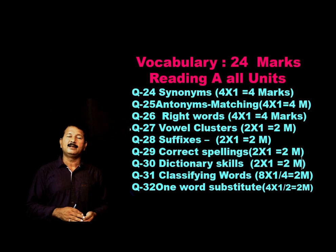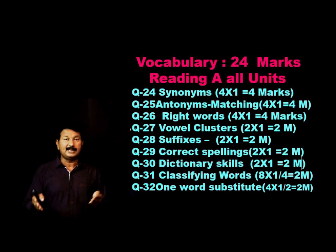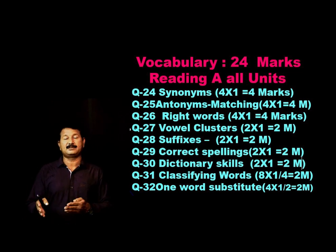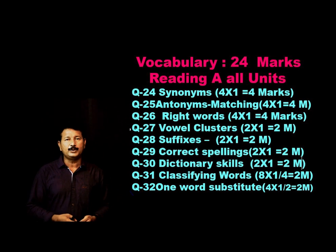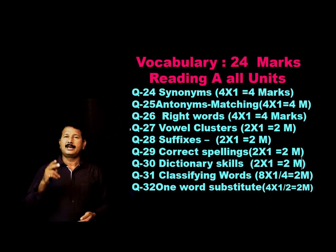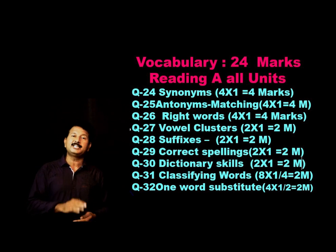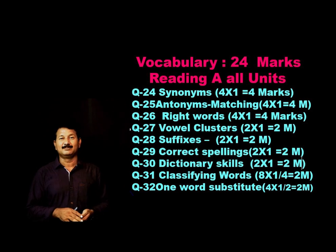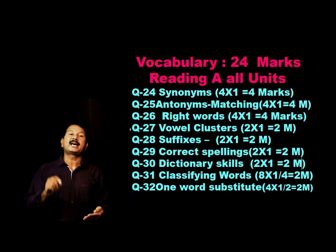Questions 27, 28, and 29 are all about spellings. Question 27 is vowel clusters — like completing a word with A, E, A, I, E options. Question 28 is suffixes — like spelling 'grammar' as G-R-A-M-M-A-R. Vowel clusters and suffixes are each 2 into 1, giving 2 marks each. Question 29 is very important — slight confusion may arise between words. You should know four spellings. Read all four words carefully, identify the wrongly spelt word, and write that as your answer.